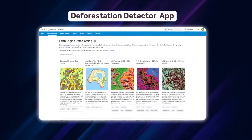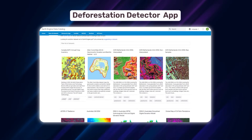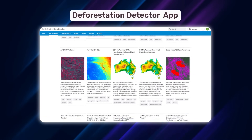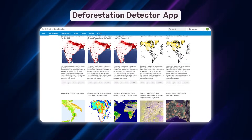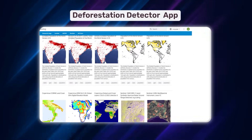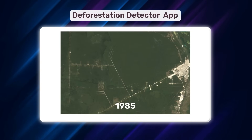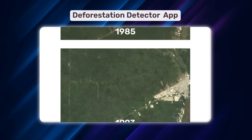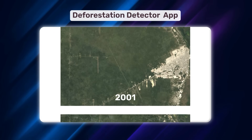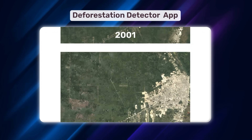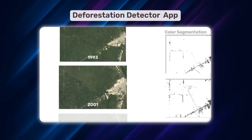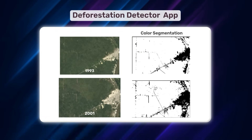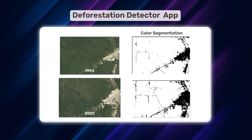First on the list, we have a deforestation detector app. Web mapping platforms like Google Maps offer freely available data that has been collected over the years. Capture a few images and using color segmentation, you can create a deforestation app.